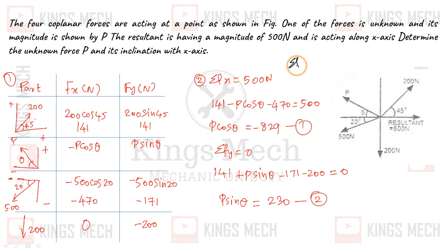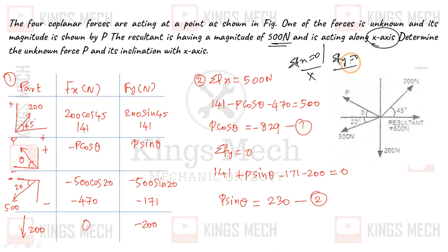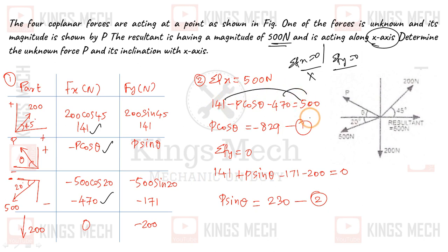Now applying equilibrium: summation F of x equals 0, and summation F of y equals 0. However, since the resultant is 500 N along the x-axis, F of x equals 500. Substituting all values: 500 minus p cos theta minus 470 equals 500. Rearranging gives minus p cos theta equals 829, so p cos theta equals minus 829.